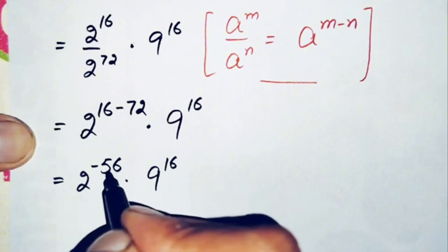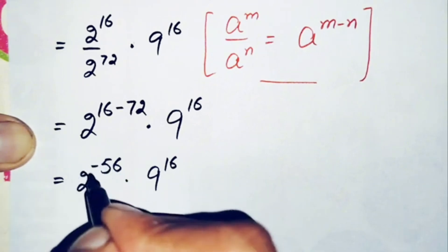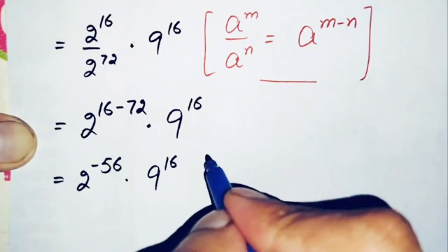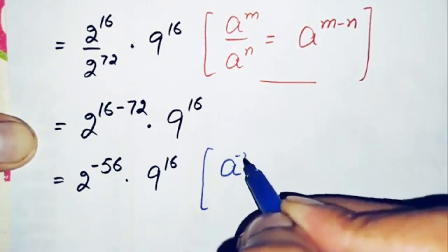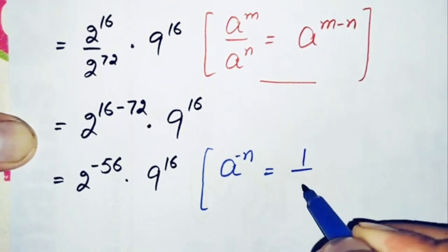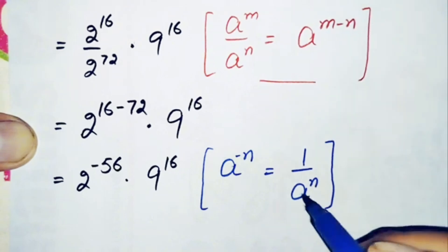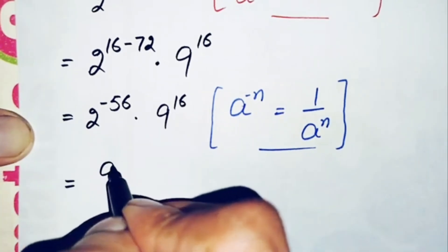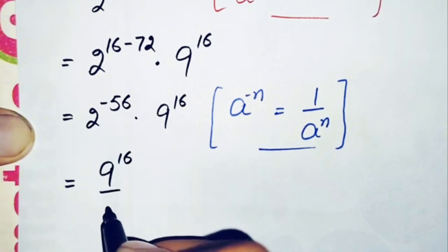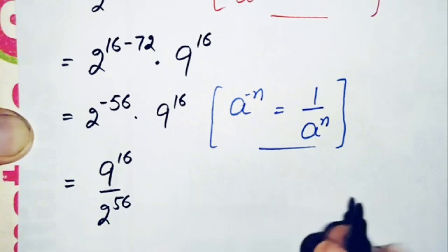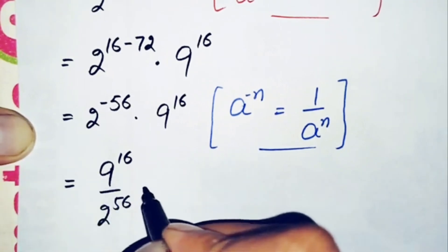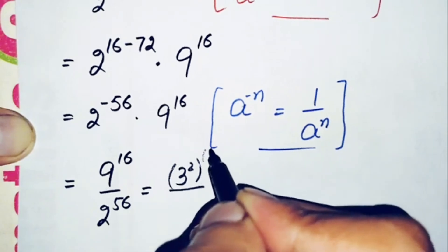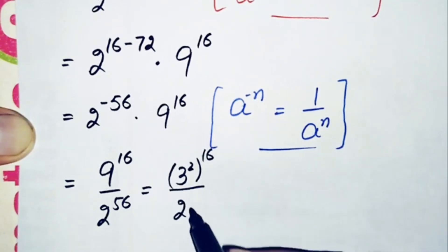The power of 2 is negative, so we use the exponential property that r raised to power minus n can be written as 1 over r raised to power positive n. Moving 2 raised to power minus 56 to the denominator makes the power positive. So this number becomes 9 raised to power 16 divided by 2 raised to power 56. Next, we change 9 to its exponential form: 9 equals 3 squared, so we write 3 raised to power 2, raised to power 16, divided by 2 raised to power 56.